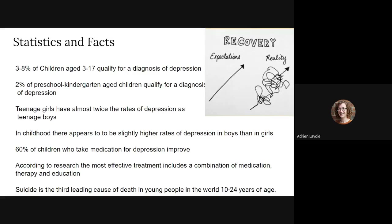The range from three to eight percent tries to account for the fact that there are quite a few children out there who have depression but go undiagnosed because people are just not aware that that is the issue. Two percent of preschool- and kindergarten-aged children qualify for a diagnosis of depression, so it is definitely more rare for younger children. Teenage girls have almost twice the rates of depression as teenage boys. In childhood, there appears to be a slightly higher rate of depression in boys than in girls, though some researchers would say it's about the same.